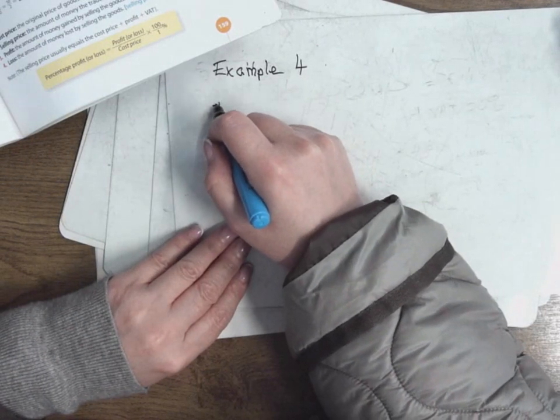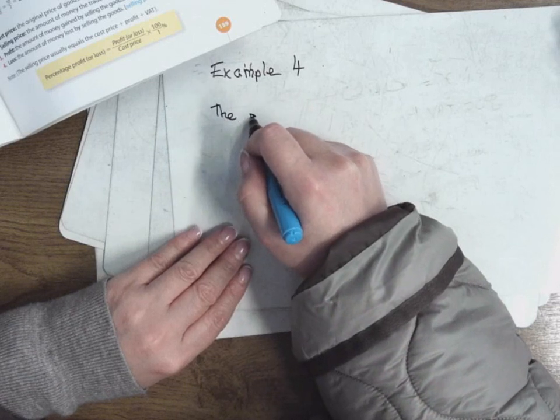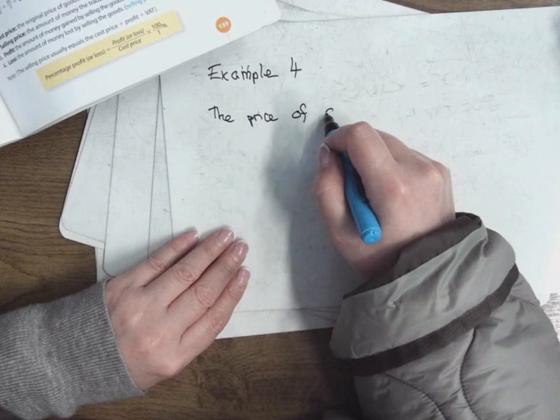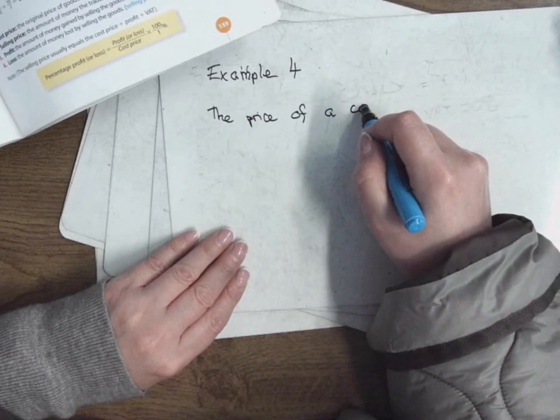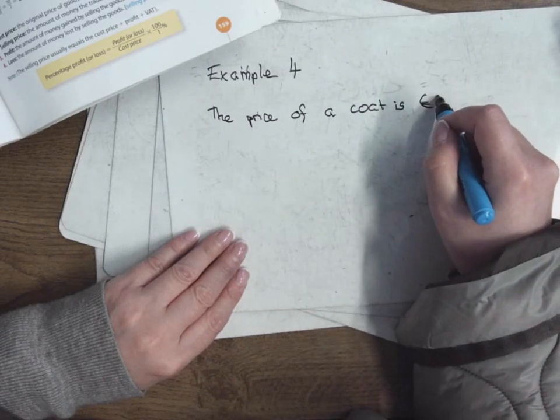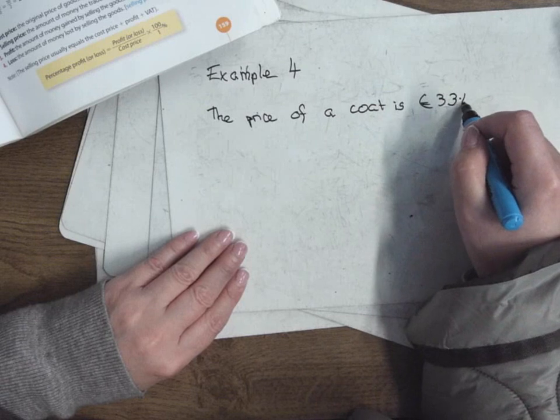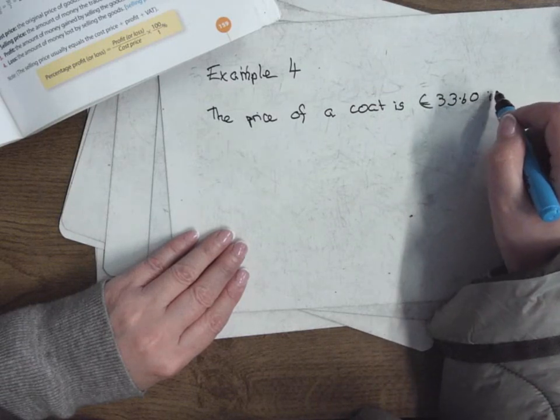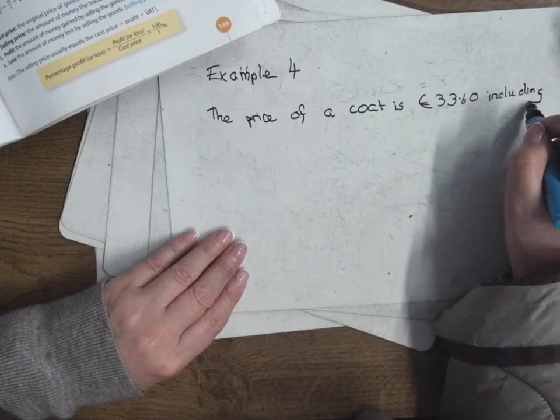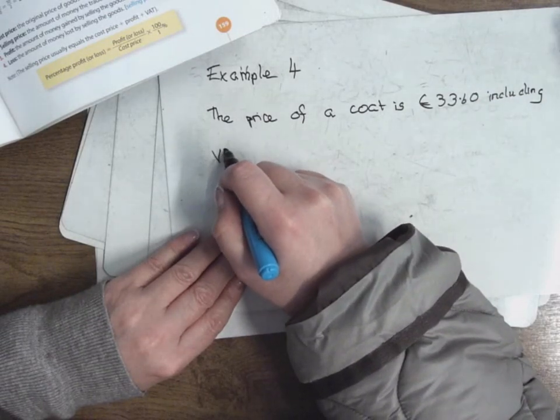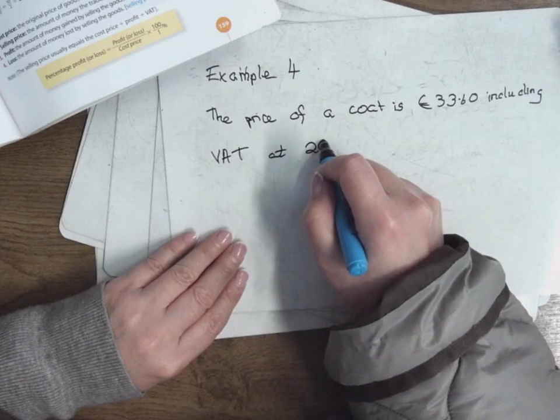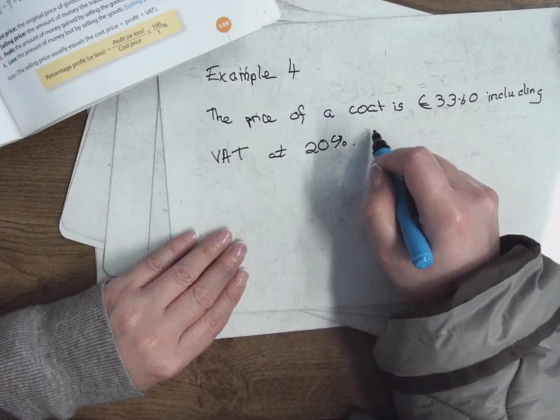The price of a coat is €3360 including VAT at 20%. Find the price before VAT.